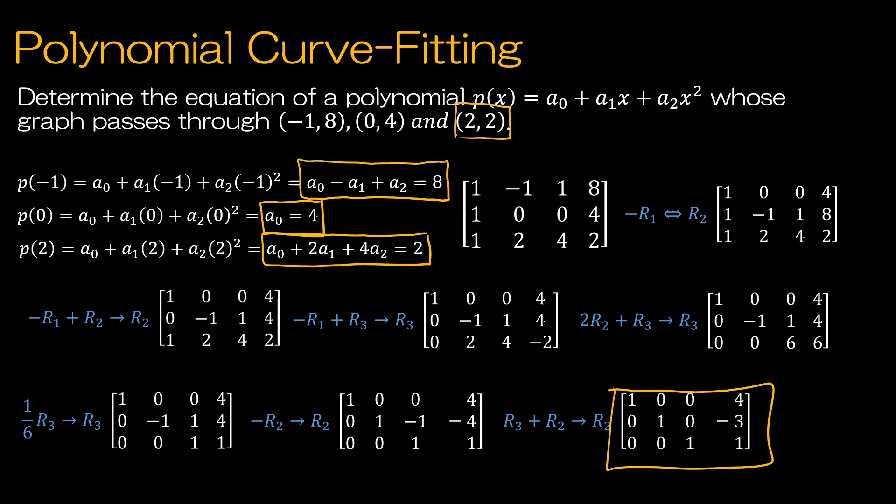What does that tell me? That tells me A0 equals 4, A1 equals negative 3, and A2 equals 1. What is the equation of the polynomial? The polynomial is replacing A0 with 4, A1 with negative 3, and A2 with 1. So my polynomial is P of X equals 4 minus 3X plus X squared.